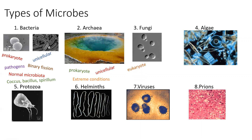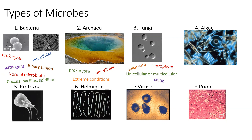Next up are fungi. The fungi are eukaryotes. Some fungi, like yeast, are unicellular, whereas other fungi, like mold, are multicellular. Most fungi are saprophytes, which is the science term for decomposers, so their main job is to break down dead and decaying organic matter and recycle those nutrients back into the environment. The fungi do have a cell wall, which gives the cell its shape and structural integrity, and the cell wall of fungi is made up of chitin.